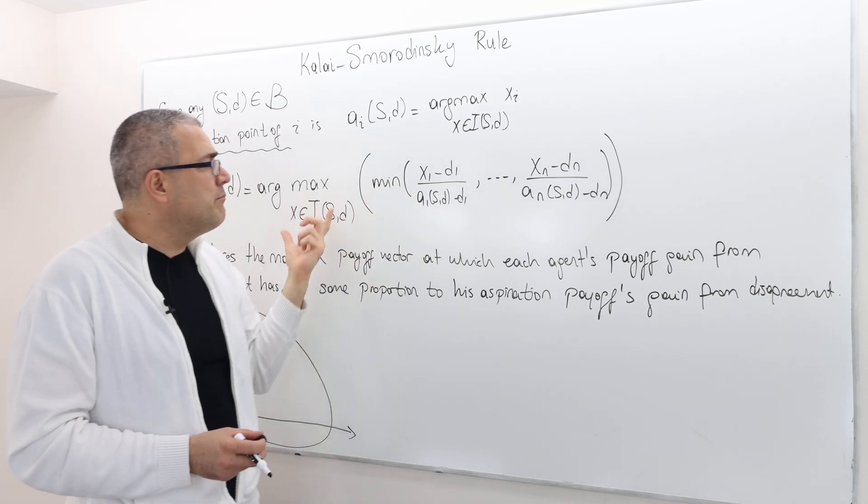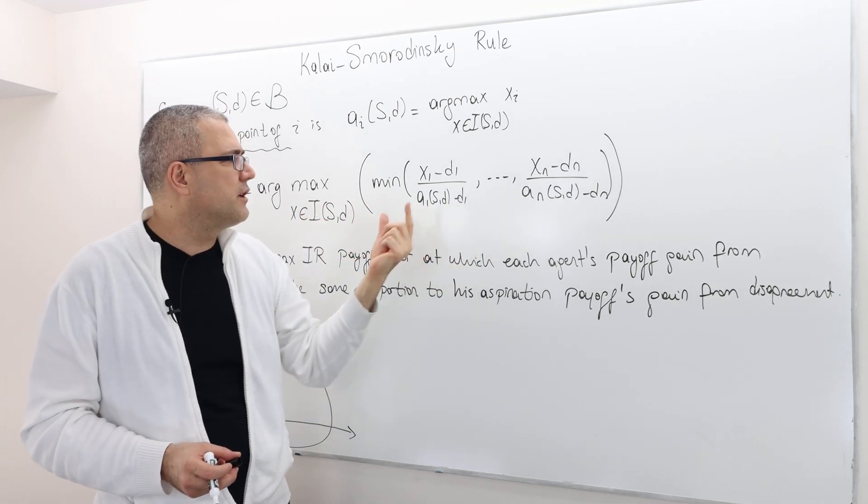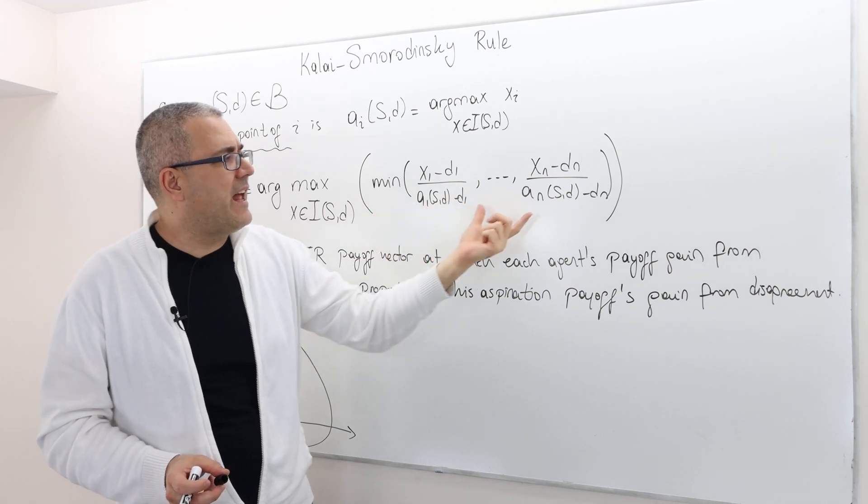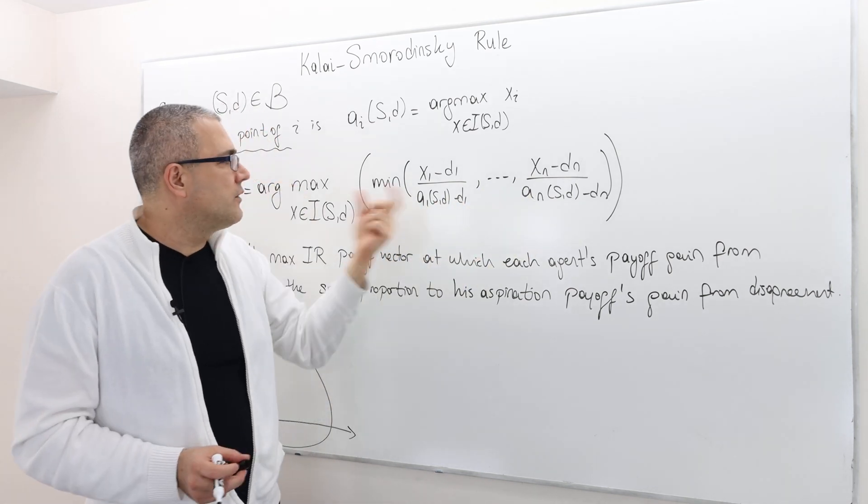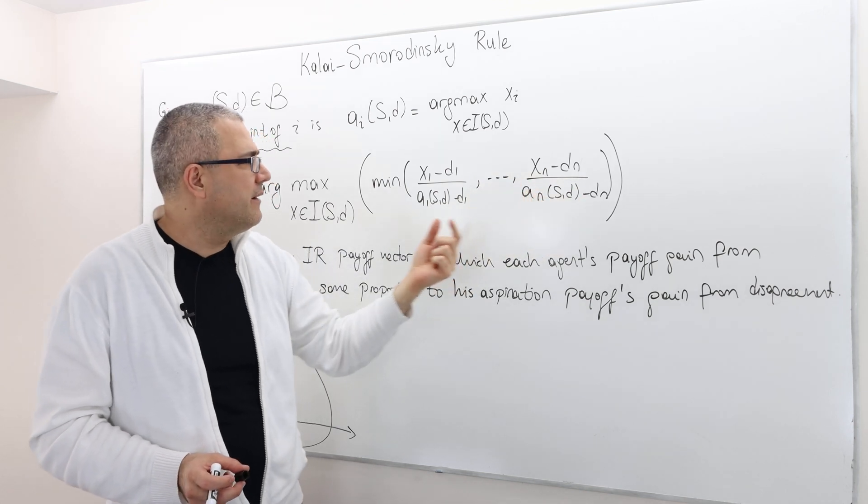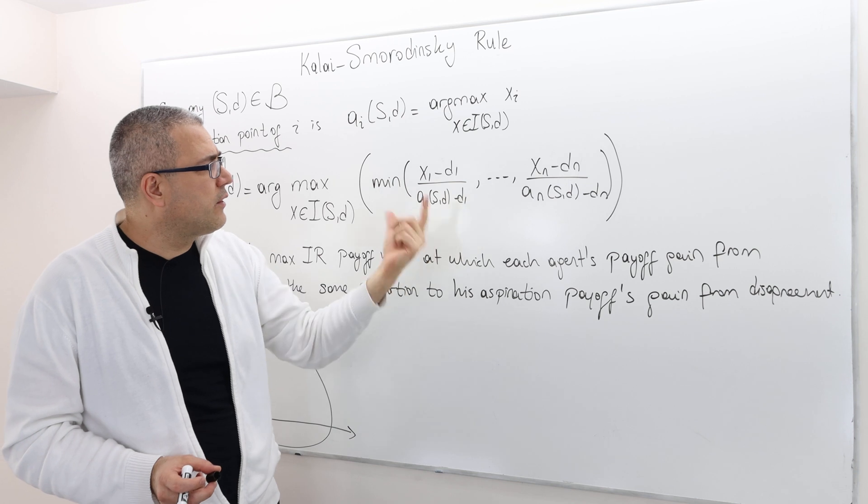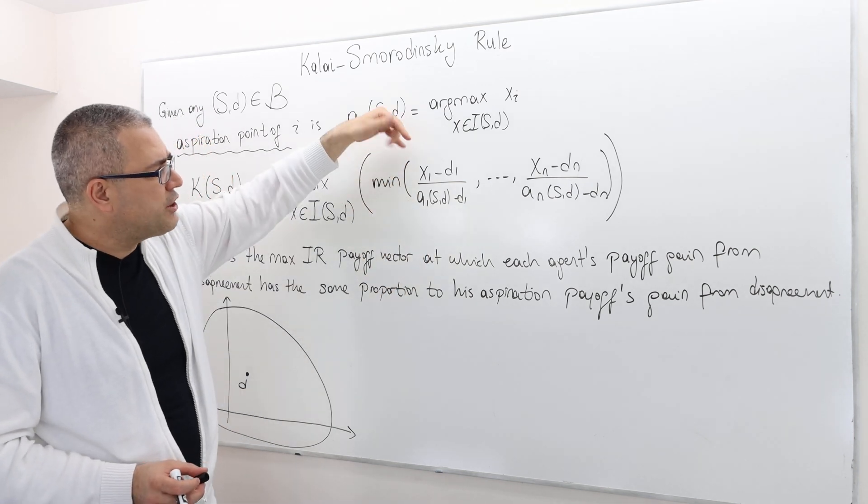It maximizes this min function. What is this min? In this min, we have N terms—this is player 1's, player 2's, up to player N—and it chooses the minimum of those. What are those terms? These are ratios.